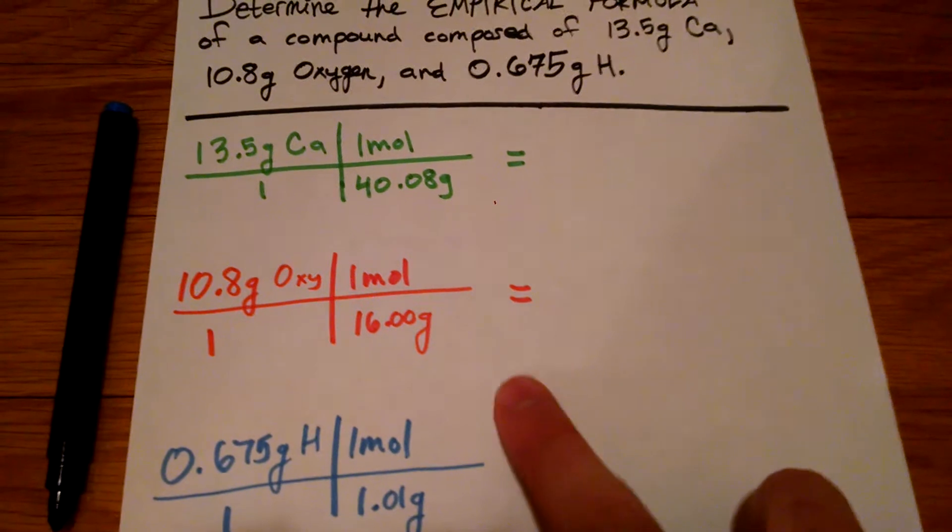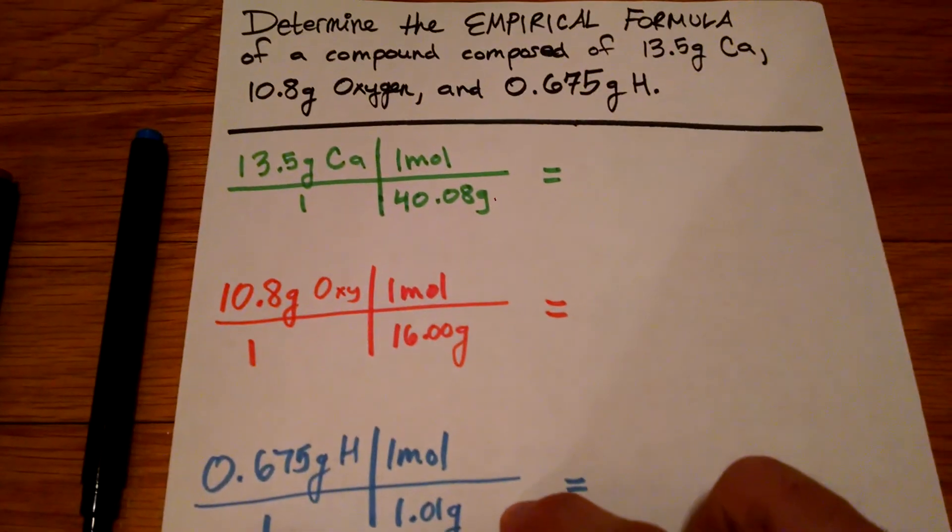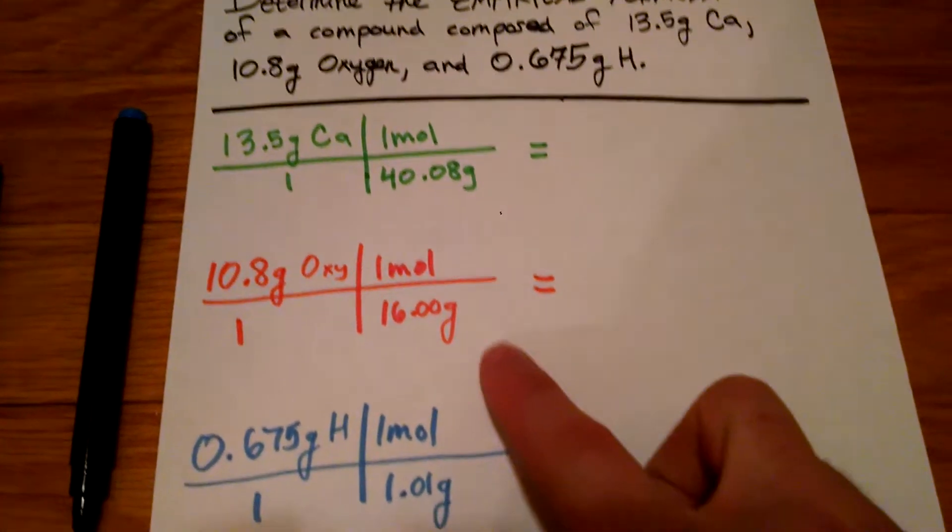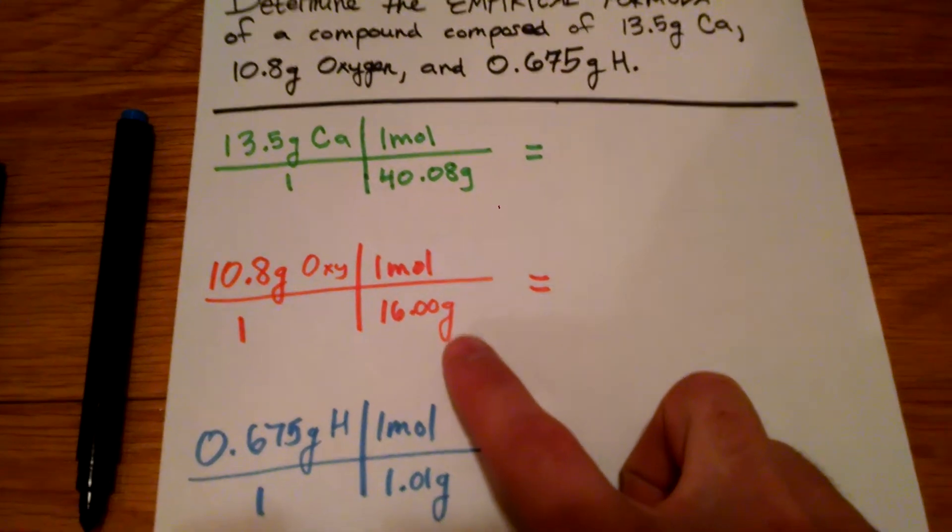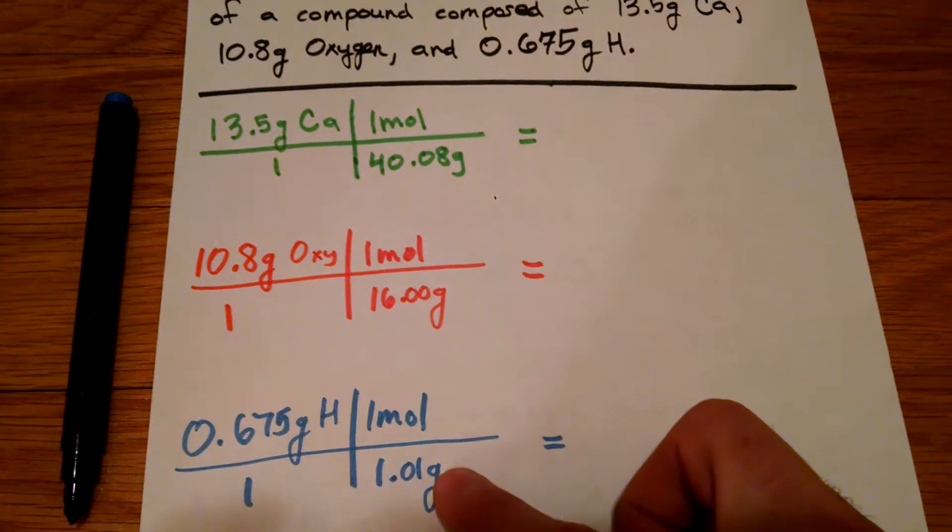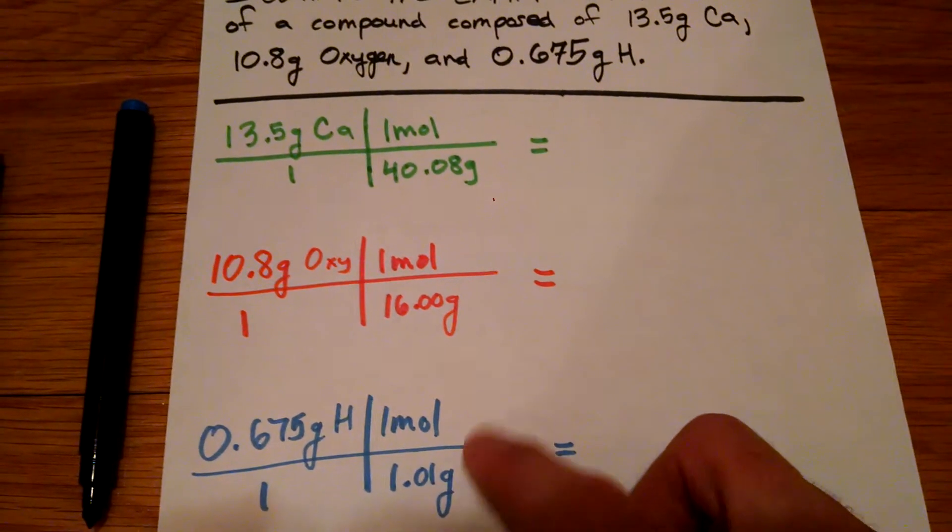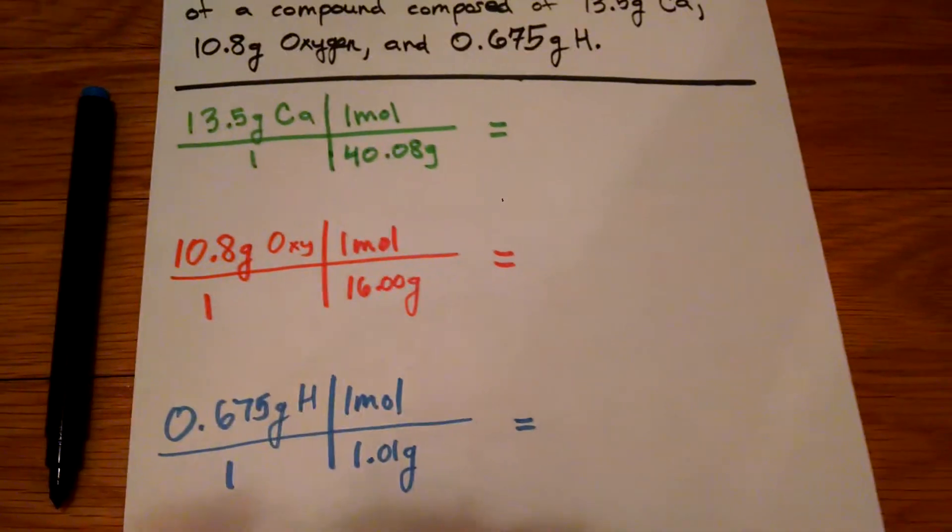Note here that oxygen and hydrogen, I know they're diatomic molecules, but we're just worrying about elemental oxygen, so not O2. Same thing with hydrogen, just H itself. So we're doing 16.00, 1.01.